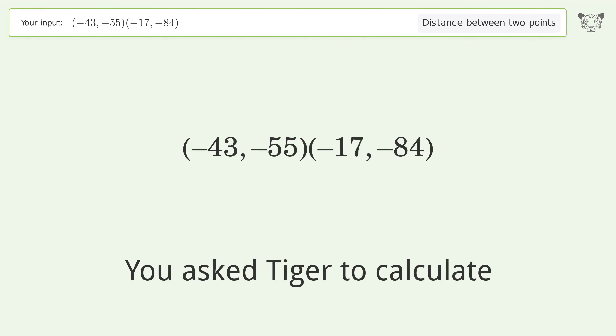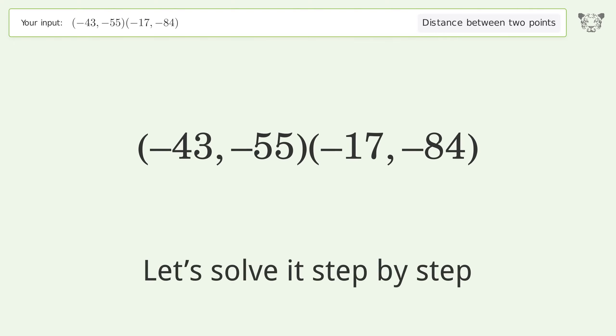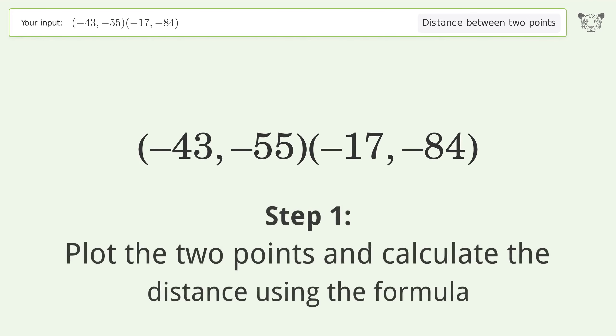You asked Tiger to calculate the distance between two points. The distance between the two points is the square root of 1517 or 38.949. Let's solve it step by step: plot the two points and calculate the distance using the formula.